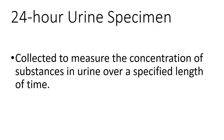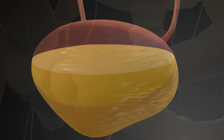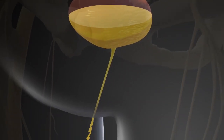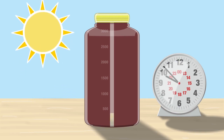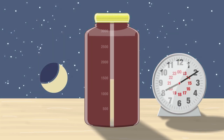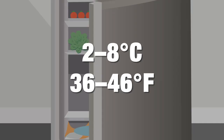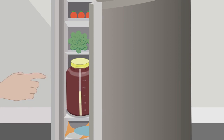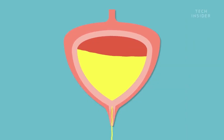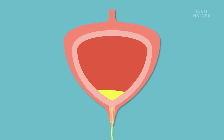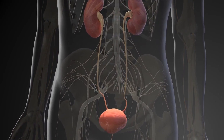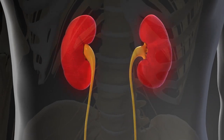A 24-hour specimen is collected to measure the concentration of substances in urine over a specified length of time. In this collection, the bladder is emptied before beginning the time of collection. The patient must begin and end the collection period with an empty bladder. Specimen must be refrigerated during the collection period unless requested by the physician. Accurate timing is critical to the calculations conducted to determine analyte concentrations and ratios. Inaccurate results may lead to improper diagnosis or improper treatment.